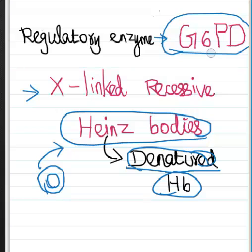In some patients, G6PD deficiency is transmitted as X-linked recessive. It gives protection against malaria for heterozygous females. Females are very important in transmitting the genes.